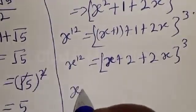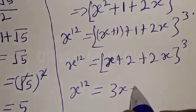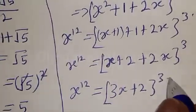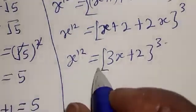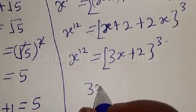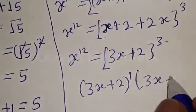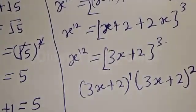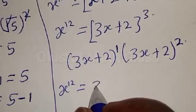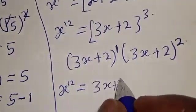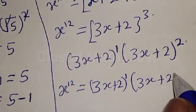So s raised to power 12 equals (3s plus 2) raised to power 3. Now (3s plus 2) raised to power 3 can be expressed as (3s plus 2) raised to power 1 multiplied by (3s plus 2) squared.